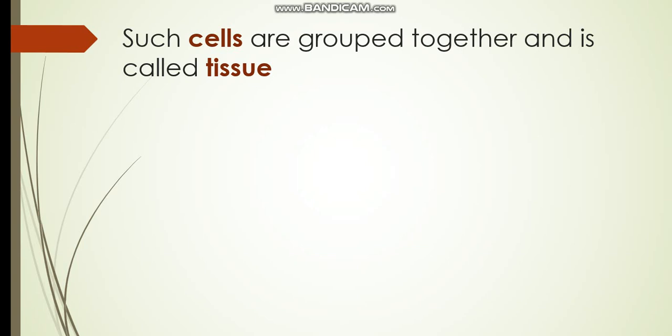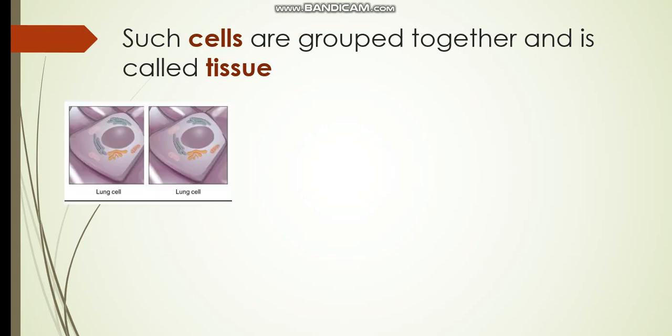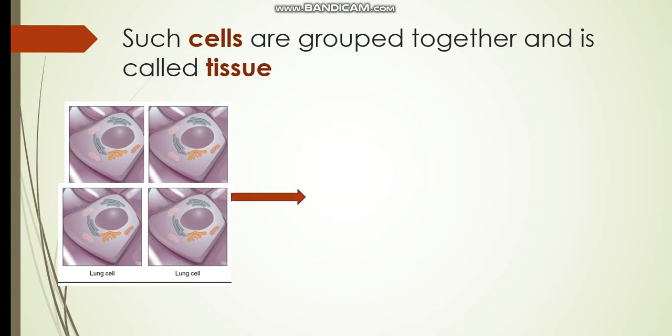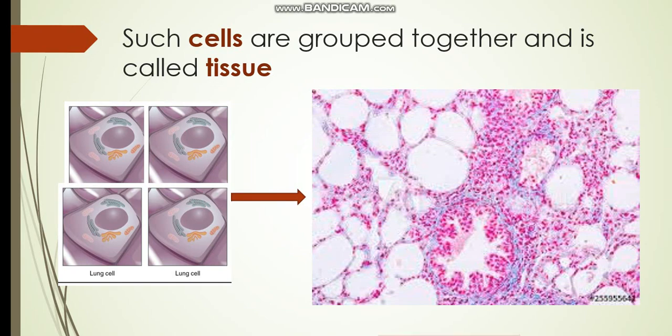Such cells are grouped together and is called tissue. For example, a group of lung cells makes a lung tissue.